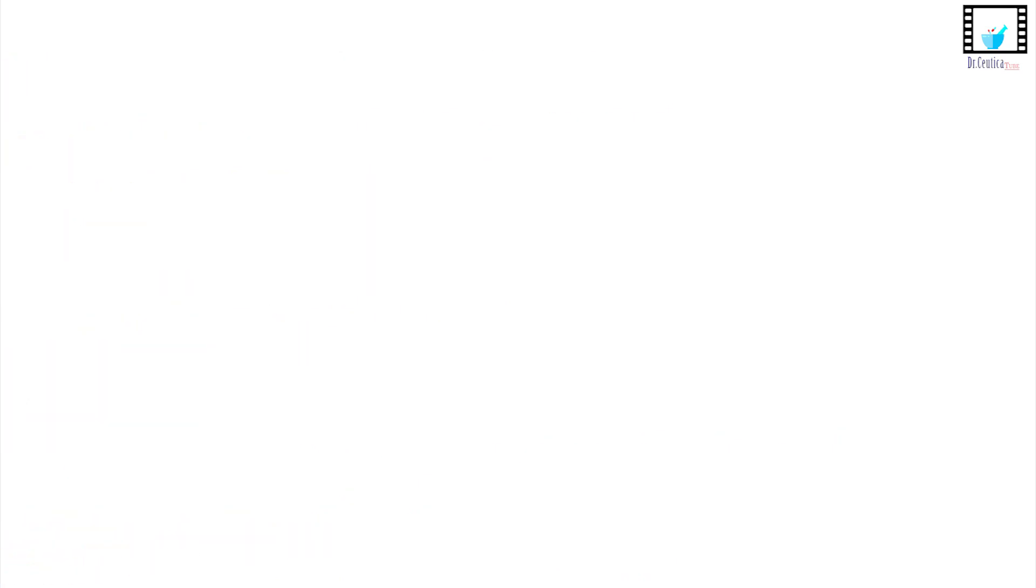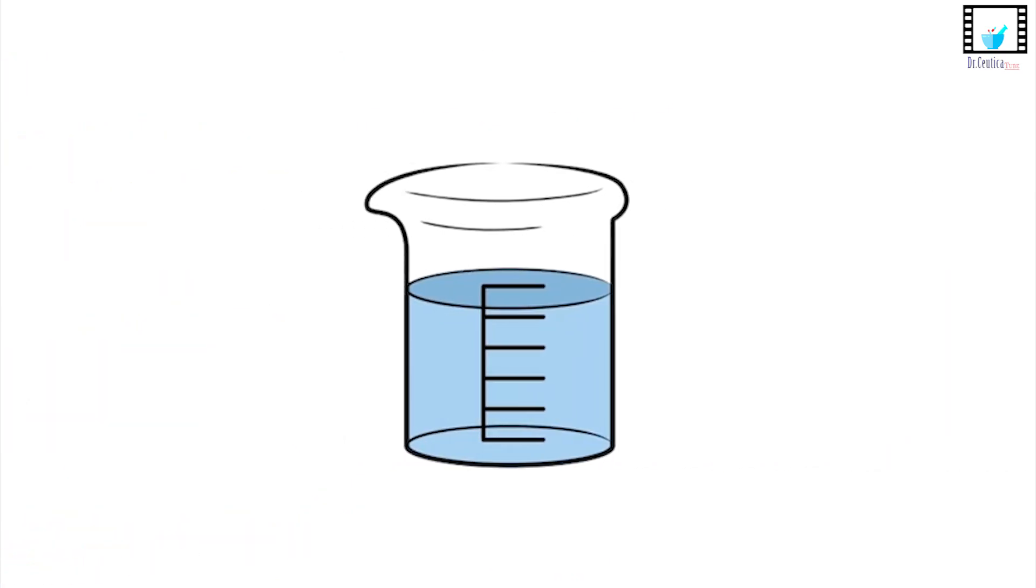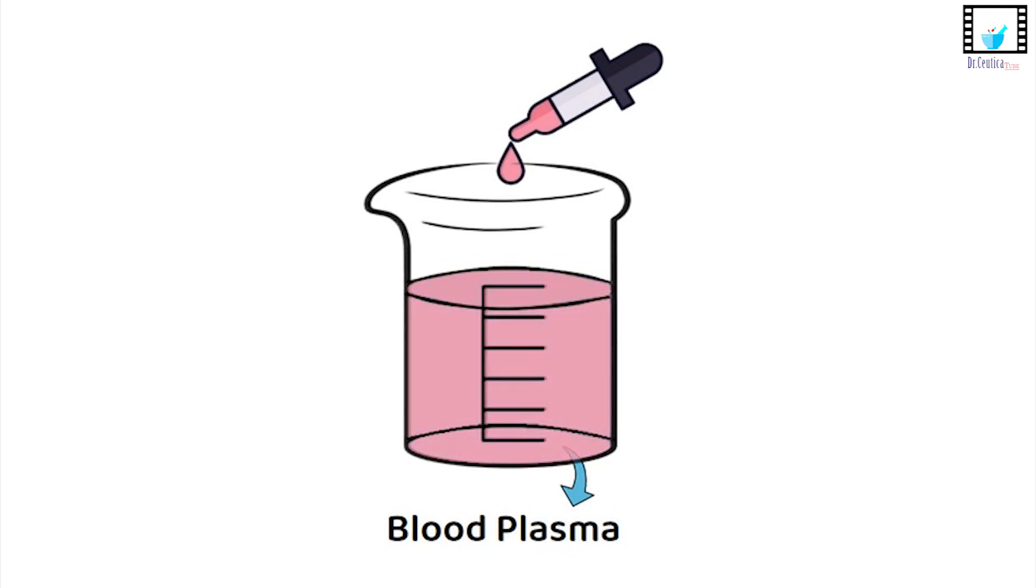To understand this in action let's visualize it. Imagine your body is a beaker filled with water. This water represents your central compartment or bloodstream. Now let's say the drug is like a drop of dye that we add to the beaker. What happens next depends on the drug's chemical properties and that's where volume of distribution comes in.